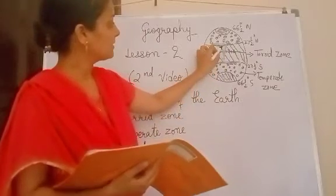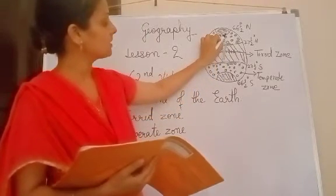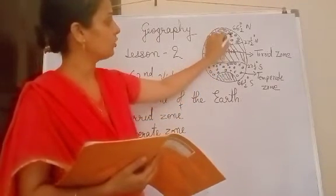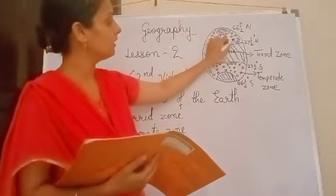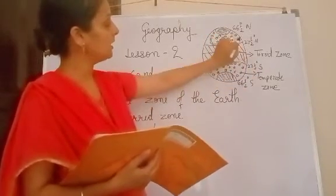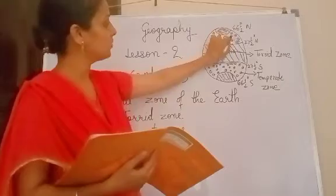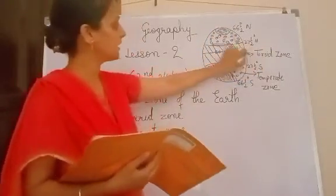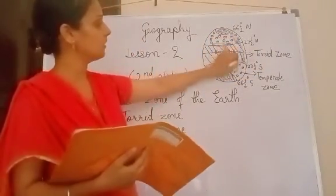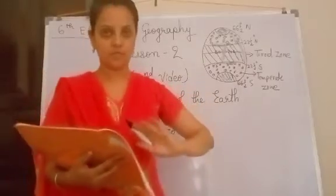See, from Tropic of Cancer up to Arctic Circle distance is called temperate zone, because in midday sun rays don't reach here. Sun rays directly reach only in this portion. Understood?